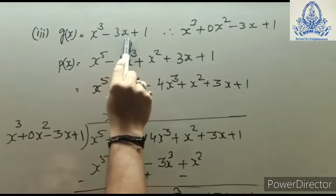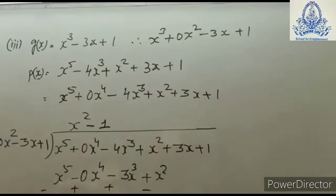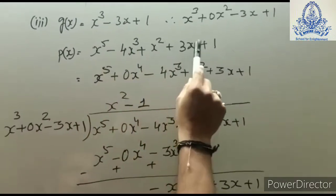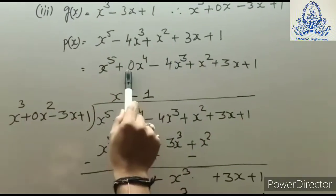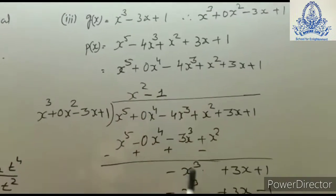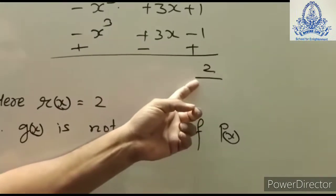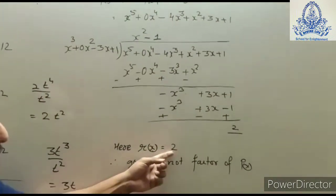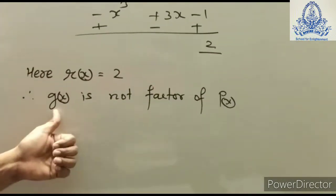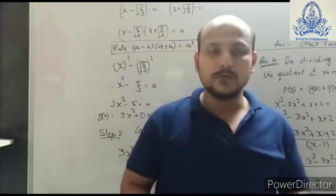For the second sub-question, g(x) has x³ and then directly x, so we add the missing x² term with a 0 coefficient. For the second polynomial, x⁵, x³, x², x are present — x⁴ is the missing term, so we add 0x⁴. After performing the long division, we get a remainder of 2. Since the remainder is not 0, g(x) is not a factor of p(x).